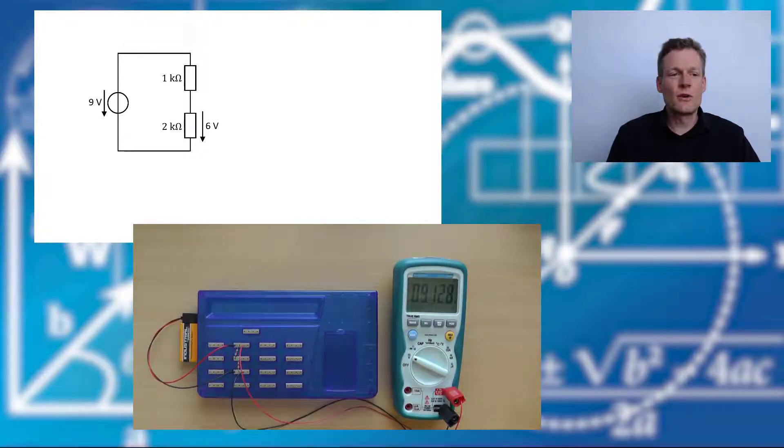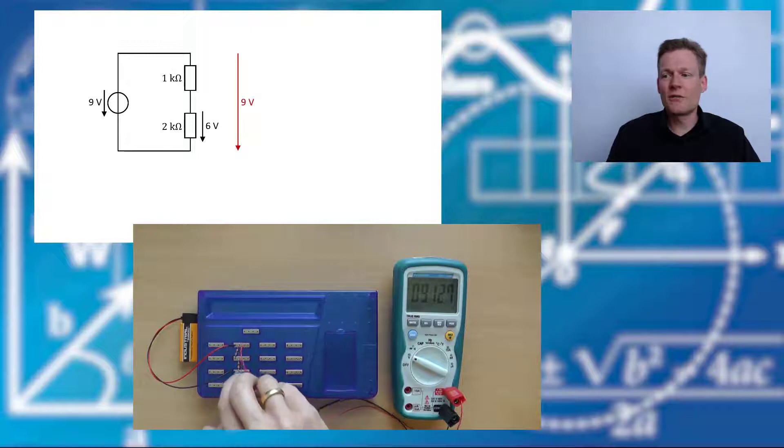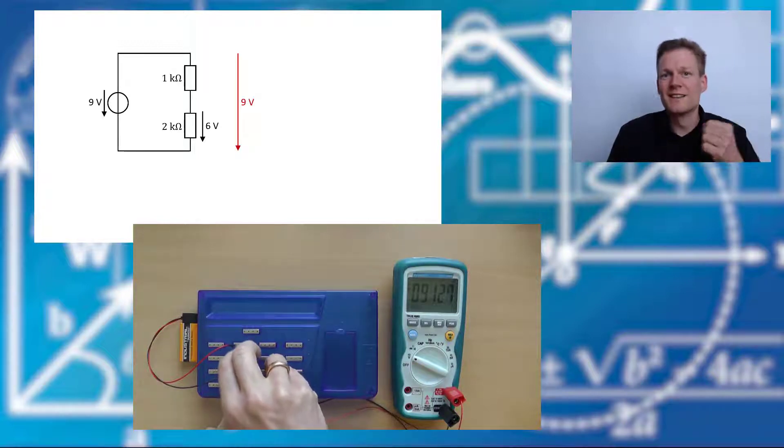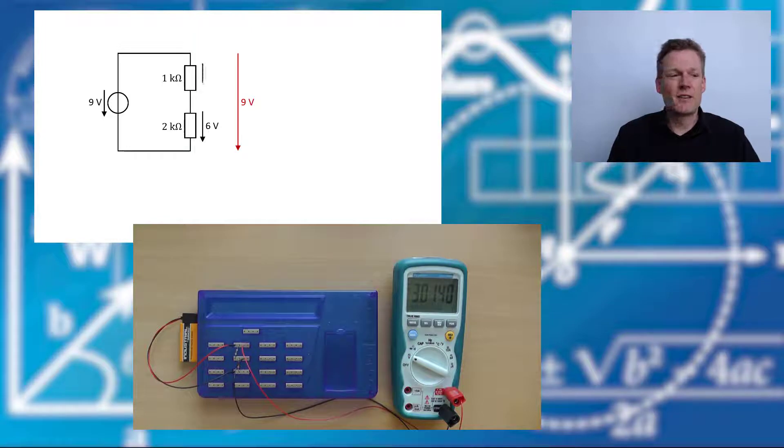Our total voltage, of course, is still 9 volts. And, surprise, surprise, the voltage drop at the 1 kOhm resistor is 3 volts.